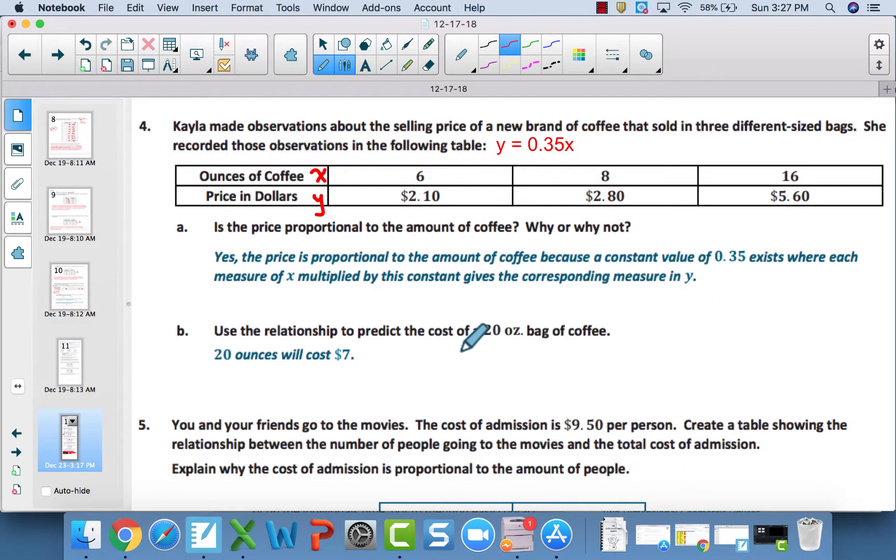Number 4, is the price proportional? Yes. There is a constant value, a constant of proportionality of 35 hundredths. Once again, if you don't see it right away, you divide and figure out if it's true for all values. In this case, it is. And I've even wrote the equation up here, y equals 35 hundredths x, meaning you multiply your ounces of coffee by 35 hundredths to get your price. In a 20 ounce bag, that means you would multiply 20 times 35 hundredths and you would get $7. So B is $7, A is yes.